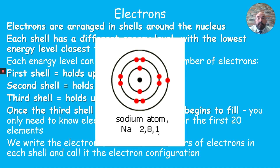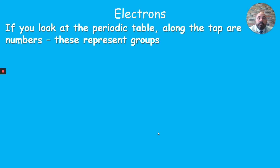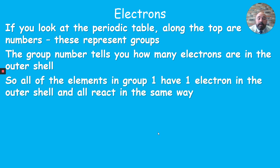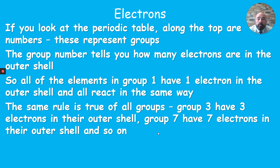There's additional information we can gather from this. The periodic table has group numbers along the top, from one through to seven and then zero. The group number tells you how many electrons are in the outer shell of that element. Sodium is in group one and has one electron in its outer shell — every element in group one has one outer electron and reacts similarly. Everything in group three has three outer electrons, group seven has seven, and so on.